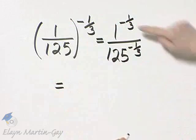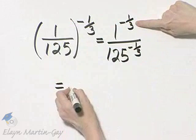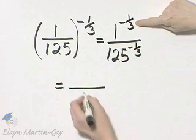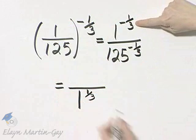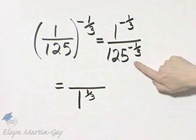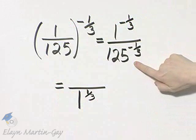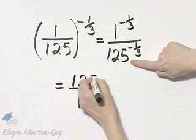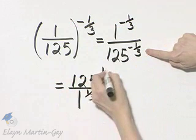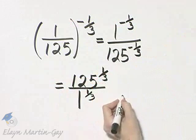And then how do we handle negative exponents? This 1 raised to the power of negative 1 third would be in the denominator as 1 raised to the 1 third power. And in the denominator, 125 raised to the negative 1 third power, that would move to the numerator raised to the positive 1 third power.